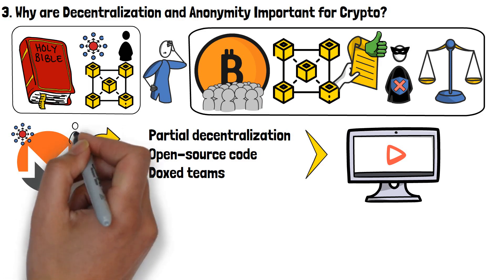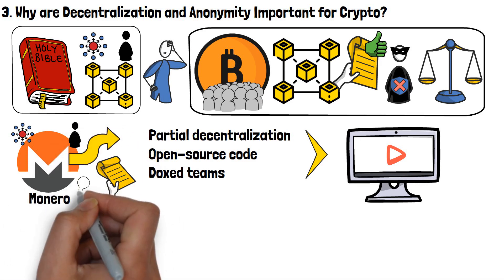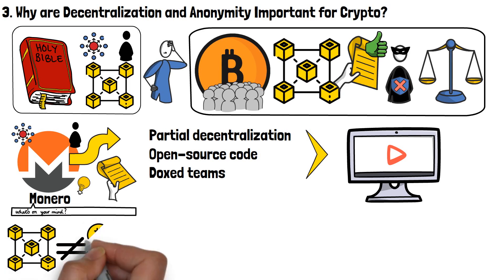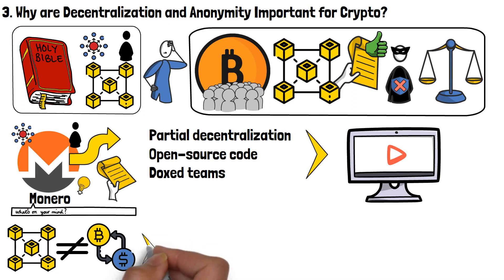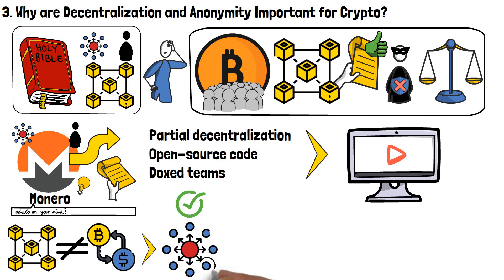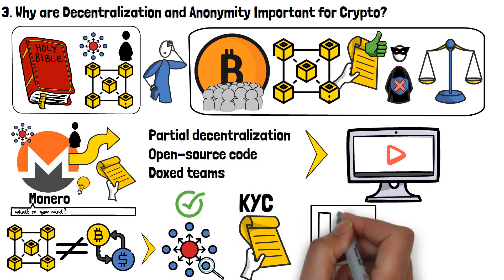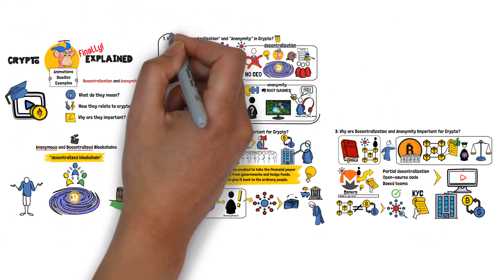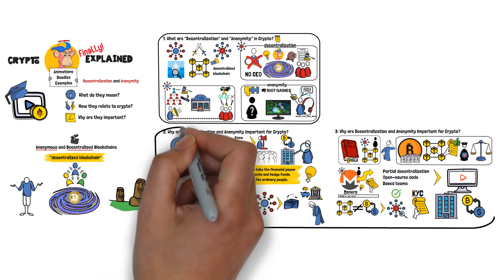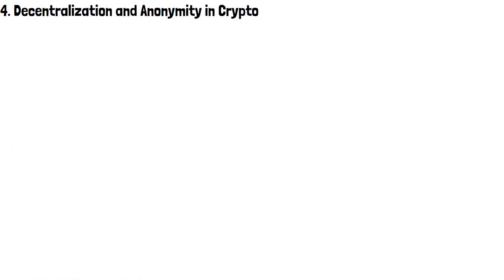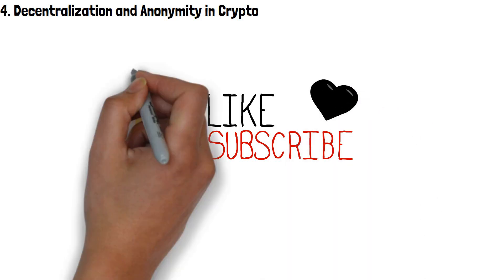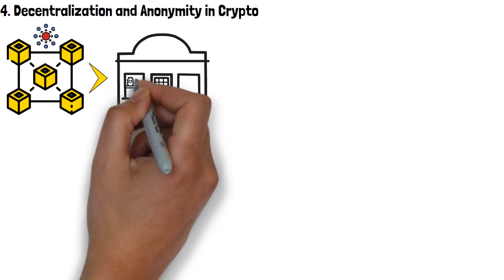Fun fact: the most decentralized and the most anonymous blockchain is often considered to be Monero. If you're interested to learn more about this peculiar project, do let me know in the comments down below. Do keep in mind that there is a difference between blockchain-based projects and platforms such as cryptocurrency exchanges or lending services. With the former, decentralization is still completely possible even with regulatory oversight. The aforementioned KYC regulations mostly apply to companies that allow individuals to buy, sell, or transact with cryptocurrencies. Starting with decentralized blockchains, we must go back to the shop example from the beginning of the video.